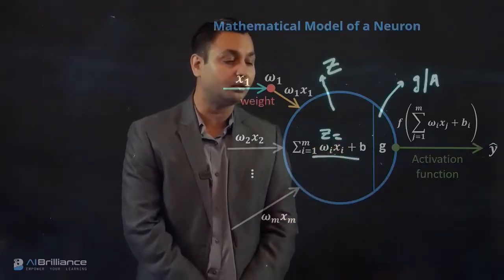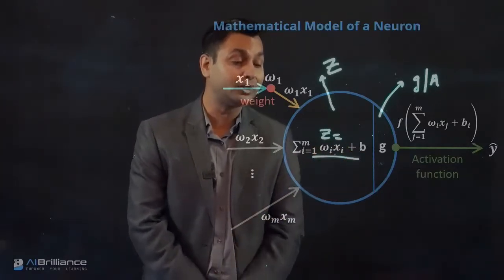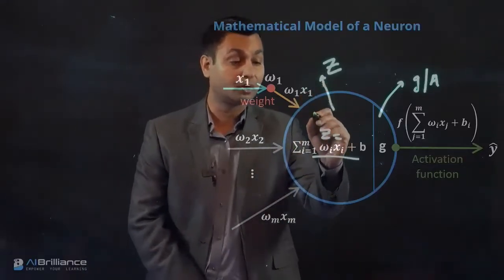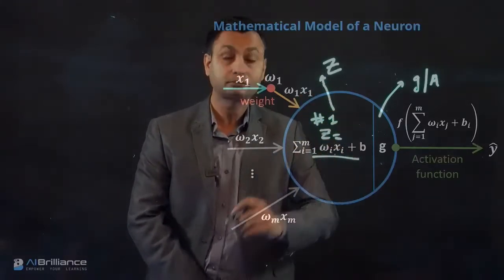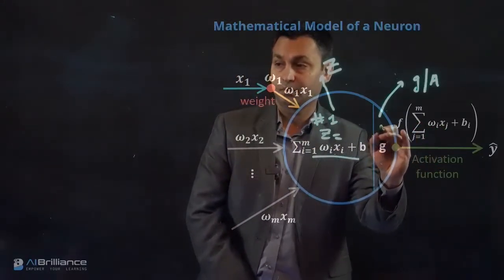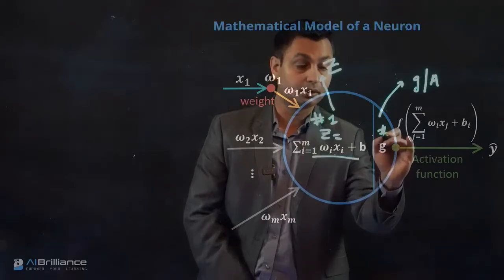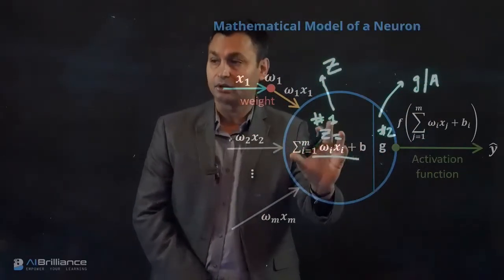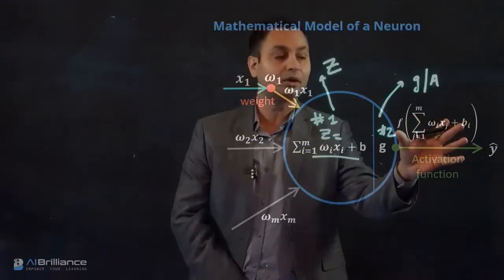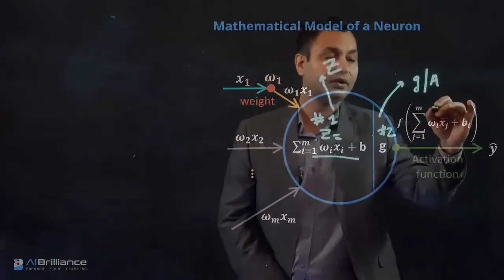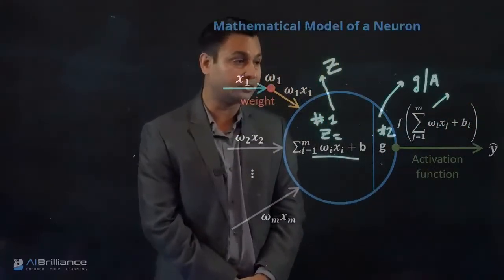That's the number one computation in a neuron. And then the second computation, or the number two computation in the neuron, is this activation or the G computation, which takes this linear combination and passes that on to a nonlinear function. And this function could be different things, and we'll talk about some of those functions which are known as activation functions.